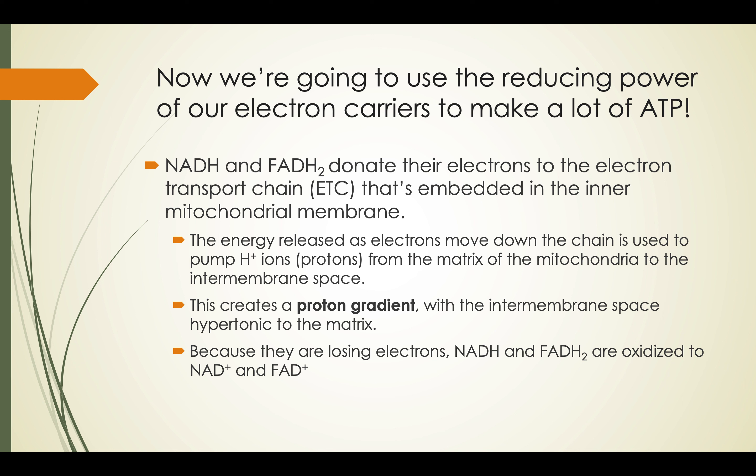You don't need to know the intermediary proteins involved. You just need to know that after the electrons are dropped off by NADH and FADH2, they are going to travel down this electron transport chain. The energy of that is going to be used to create a proton gradient — we're going to be pumping protons, hydrogen ions, into the intermembrane space using this energy. Because they're losing their electrons, NADH and FADH2 are being oxidized — lose electrons, oxidation — and they are going to be converted to NAD and FAD.